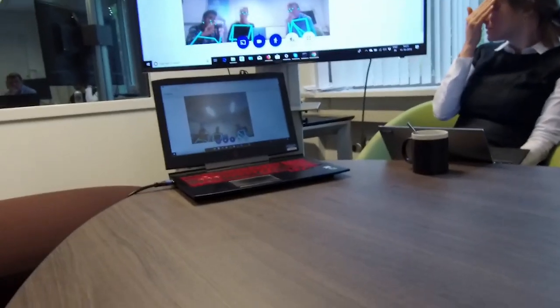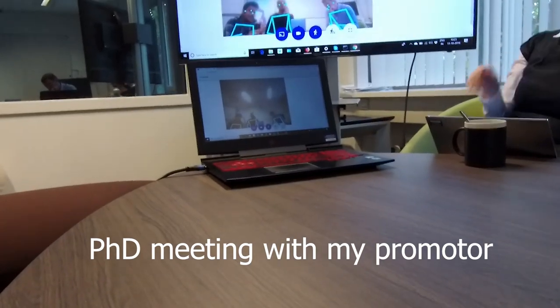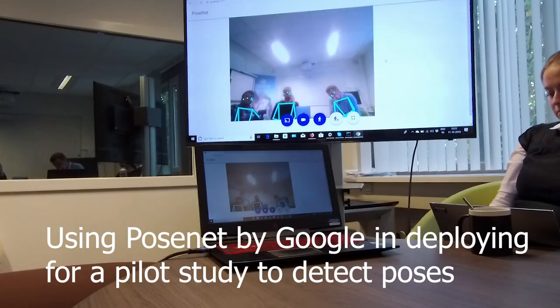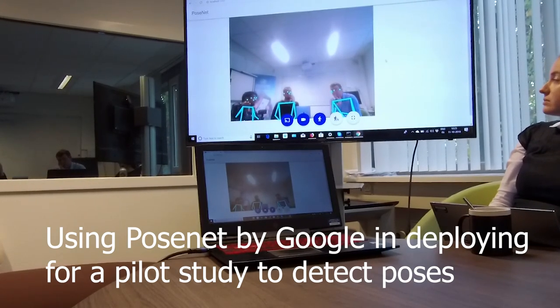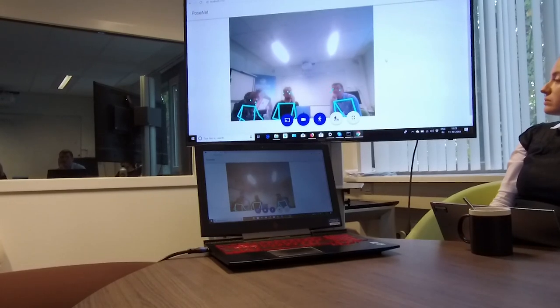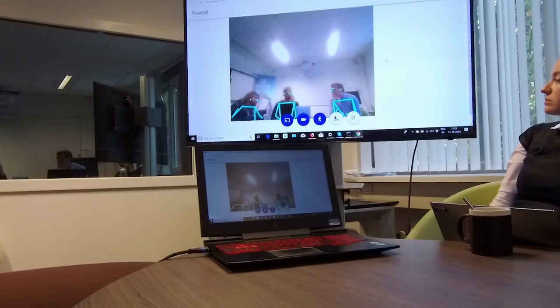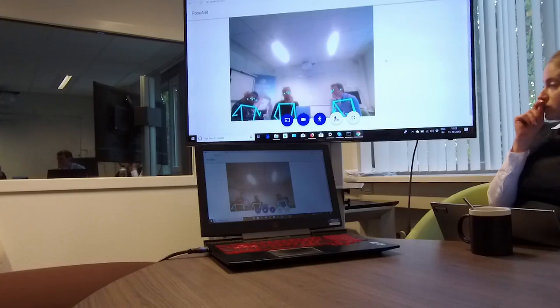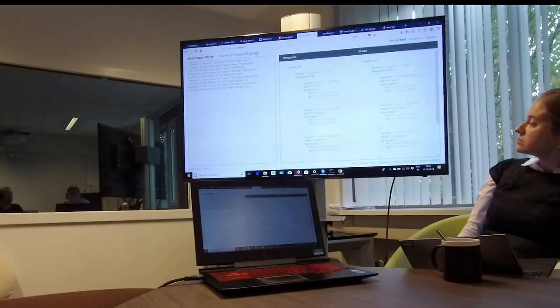So this is called PoseNet. They have made it open source by Google. And what they do is, if you install it in your PC and set up everything, they have made it open source. This is the client and it is streaming in the server. So the server is streaming JSON data of this, I mean the positions of each person.